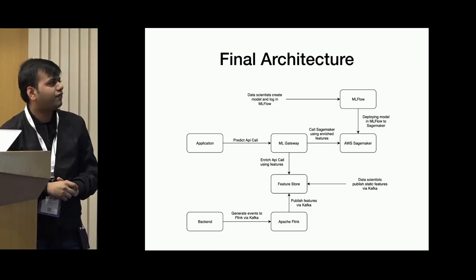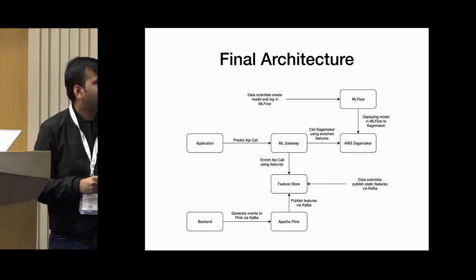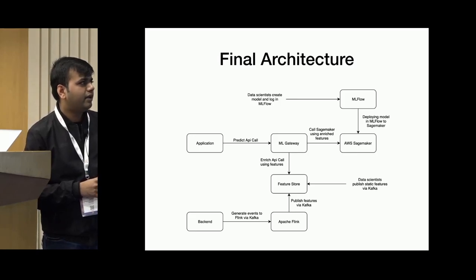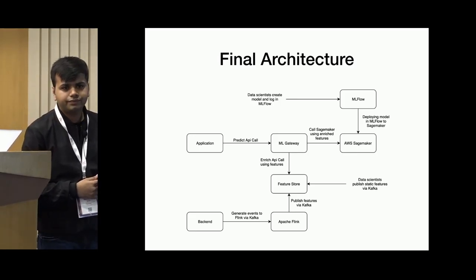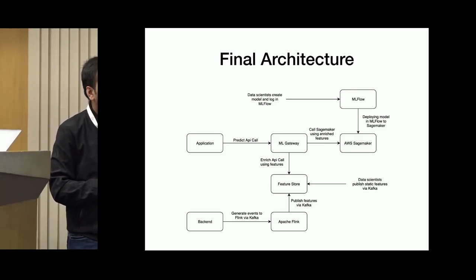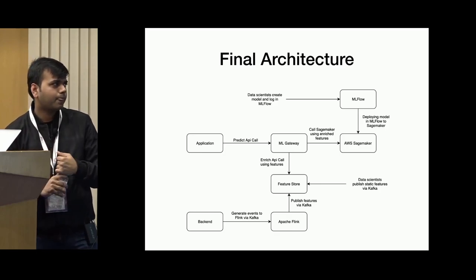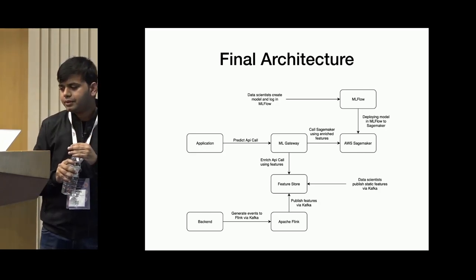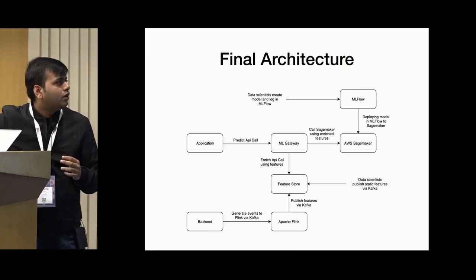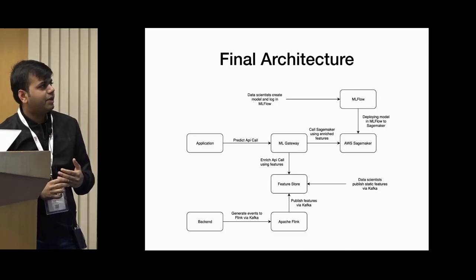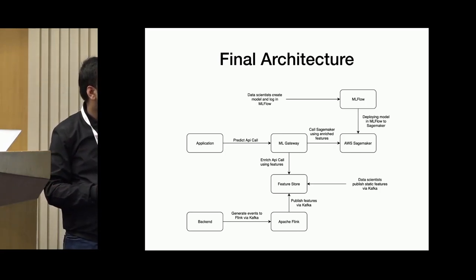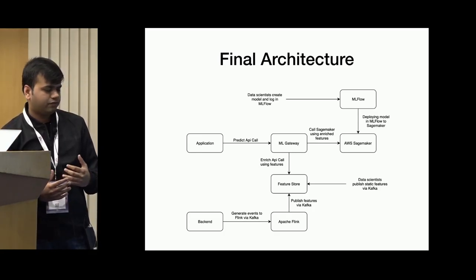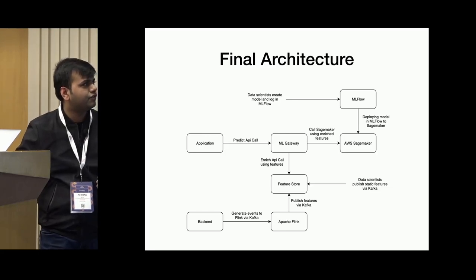This is the final architecture deployed in production. A data scientist publishes their model to MLflow. An engineer deploys it to SageMaker. The ML gateway takes a Predict API call, fetches features from the feature store powered by Redis and Cassandra for static features, with Apache Flink computing streaming real-time features.